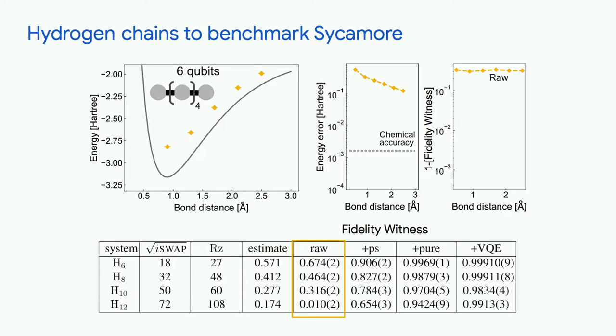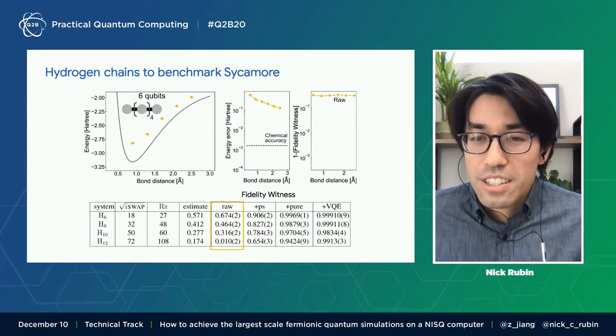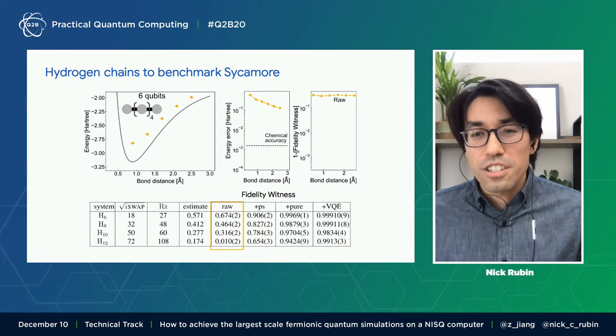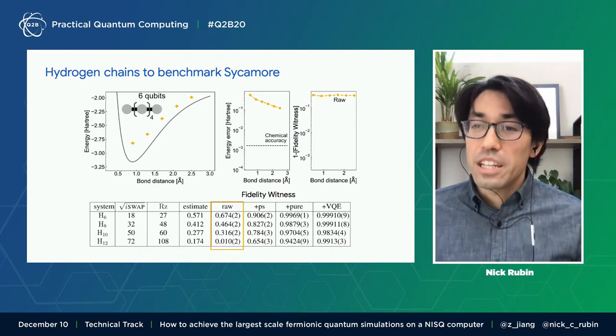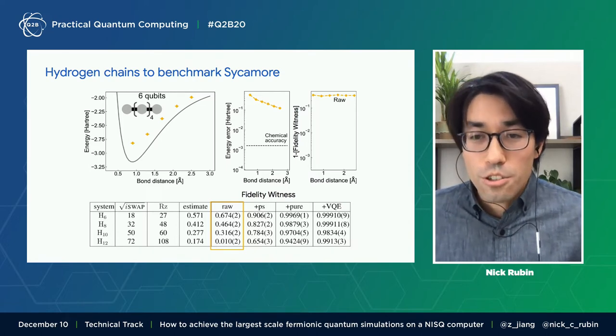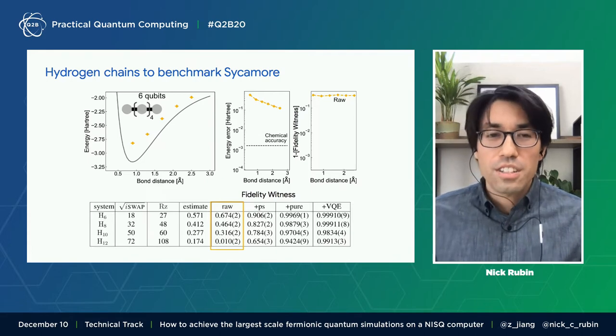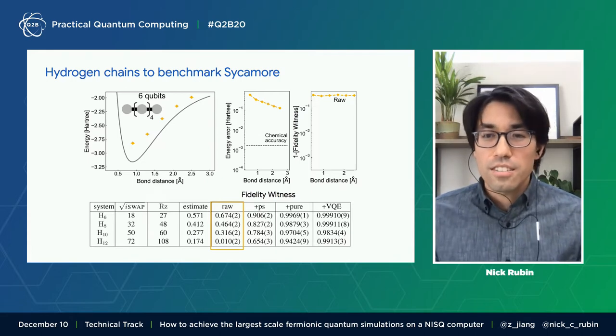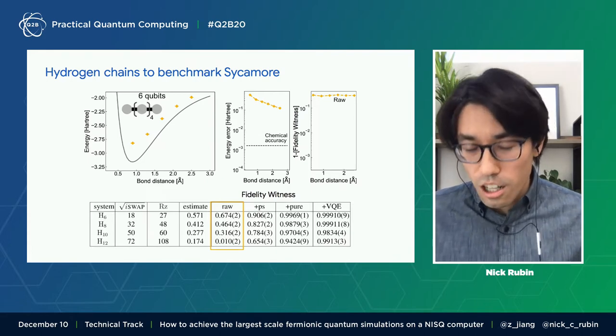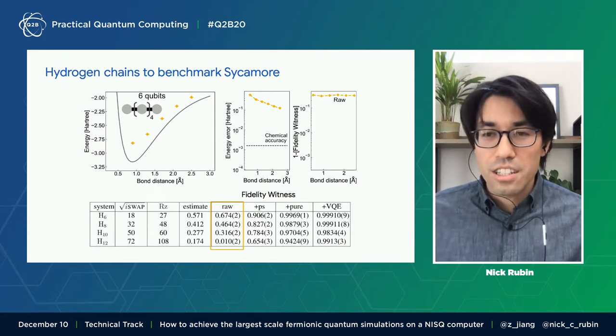So the simplest thing that we can do is perform a series of experiments on the simplest set of molecules one could imagine: hydrogen chains. These are just rows of hydrogen atoms of different lengths, and so we look at systems that have six hydrogens up to 12 hydrogens. And we implement this basis rotation circuit primitive.